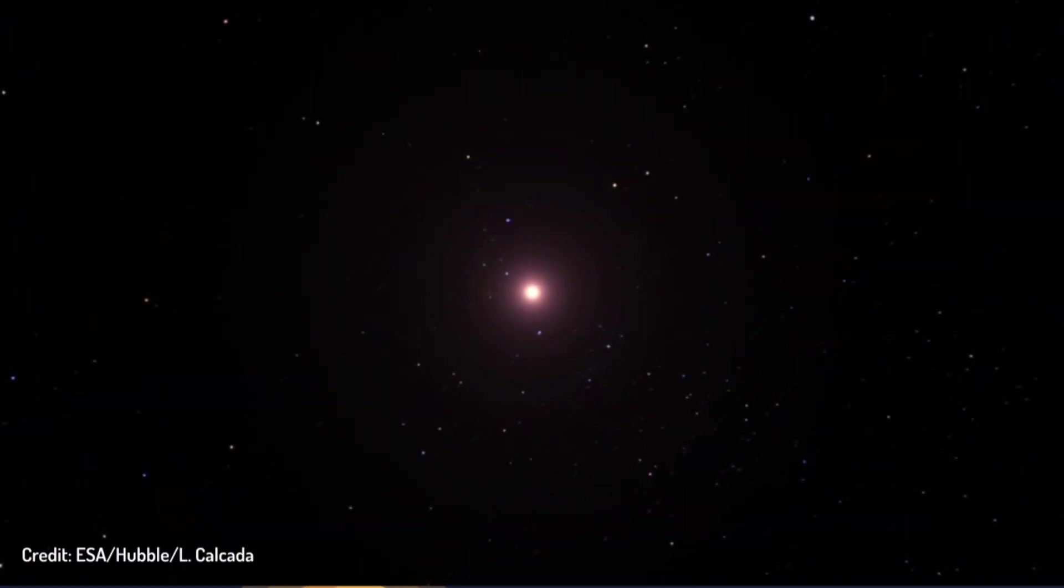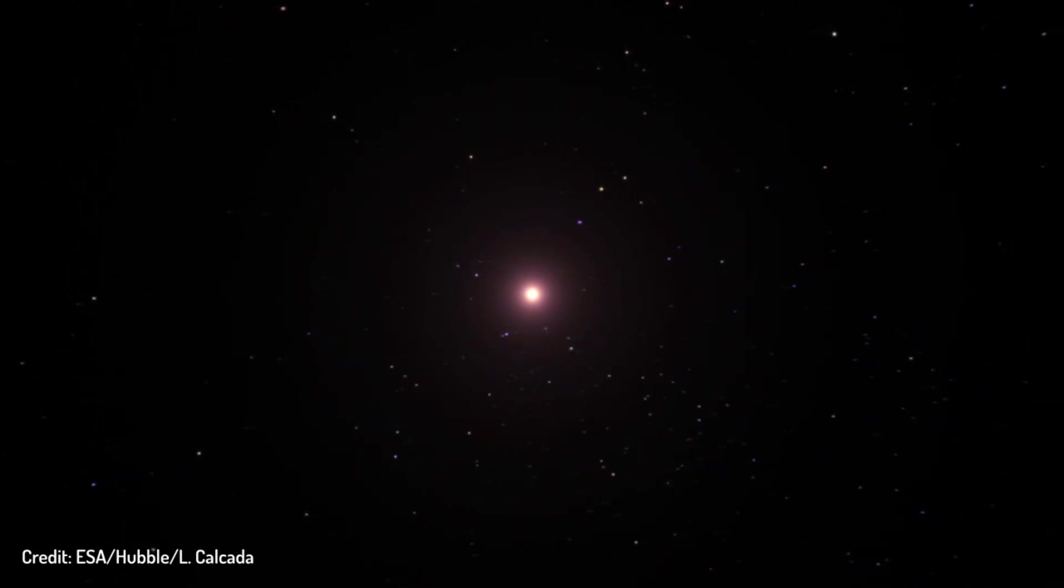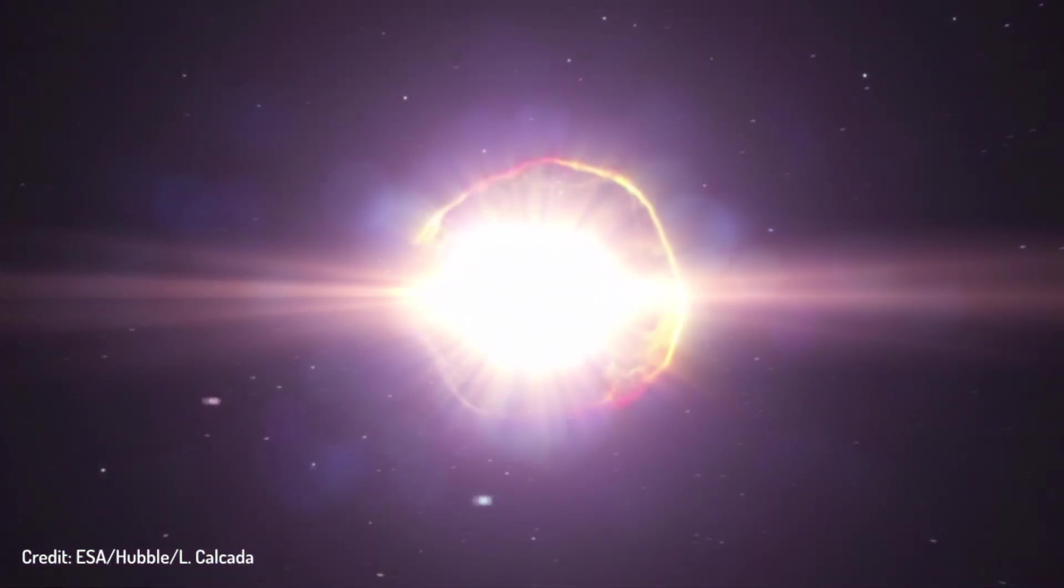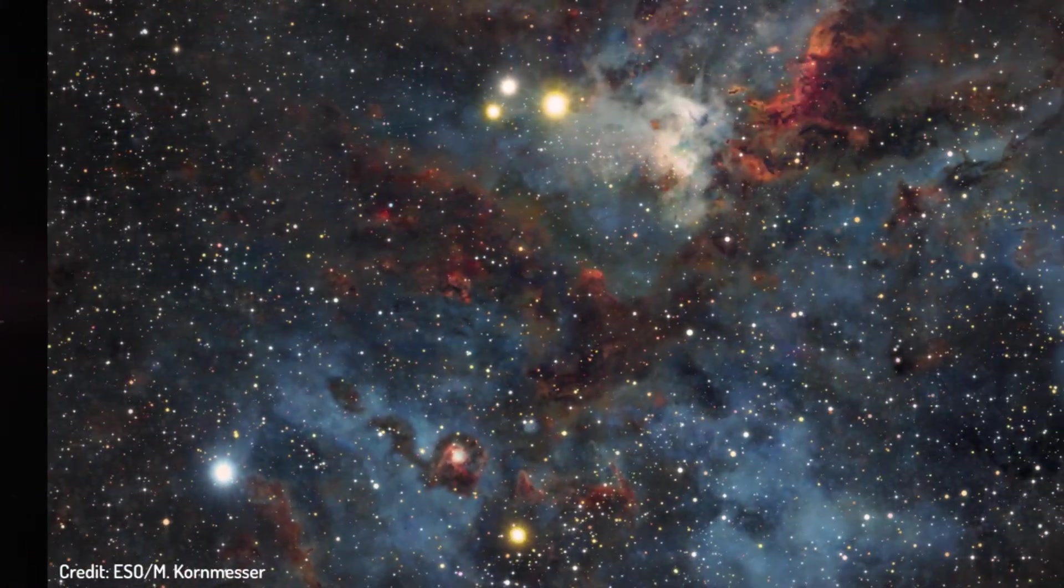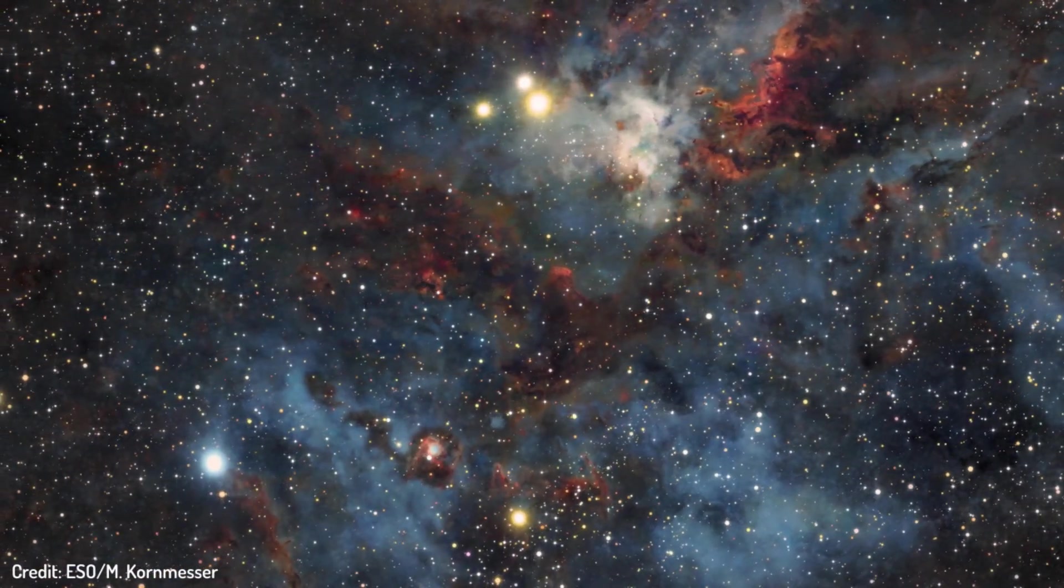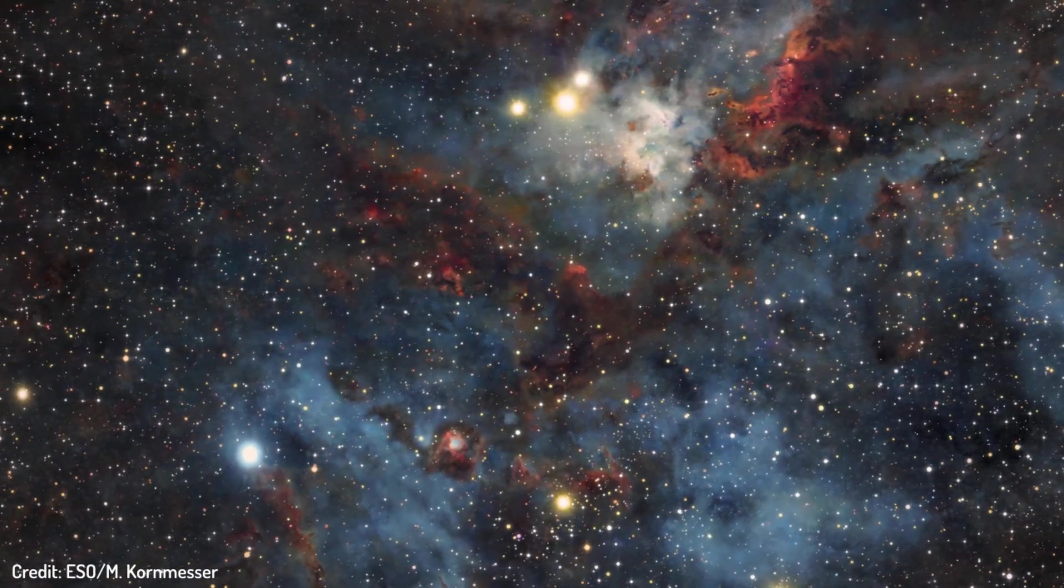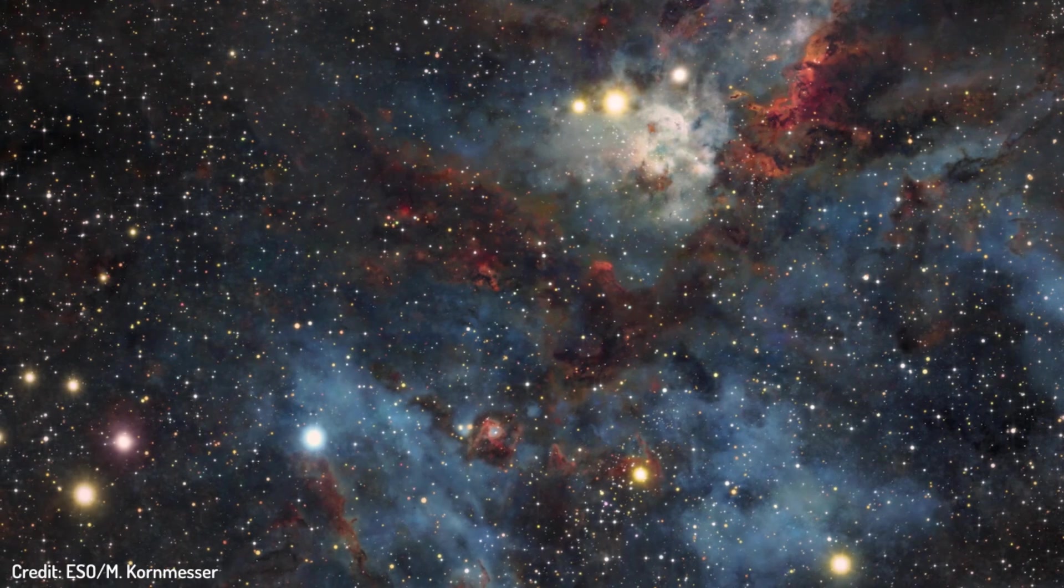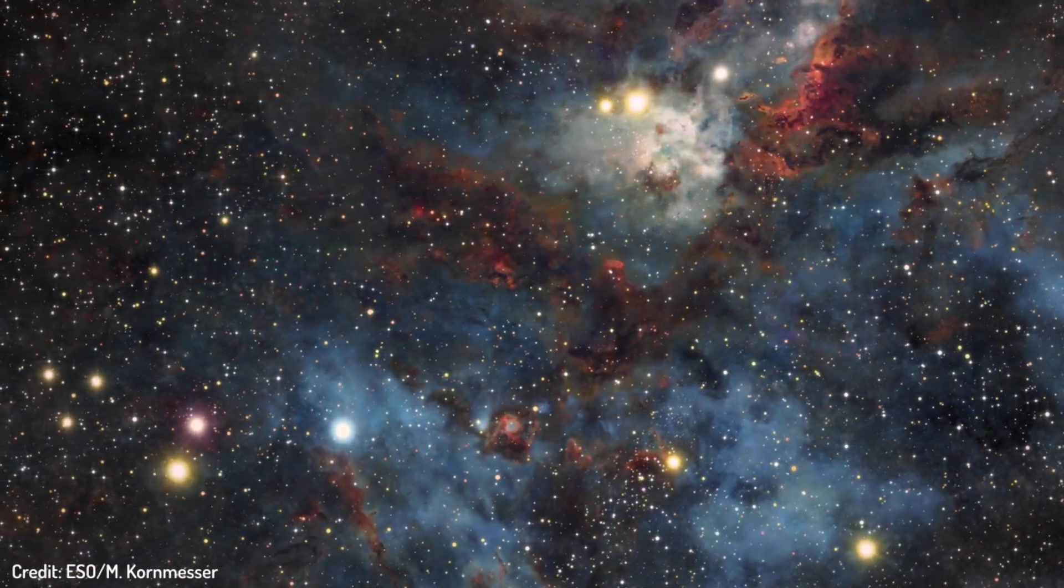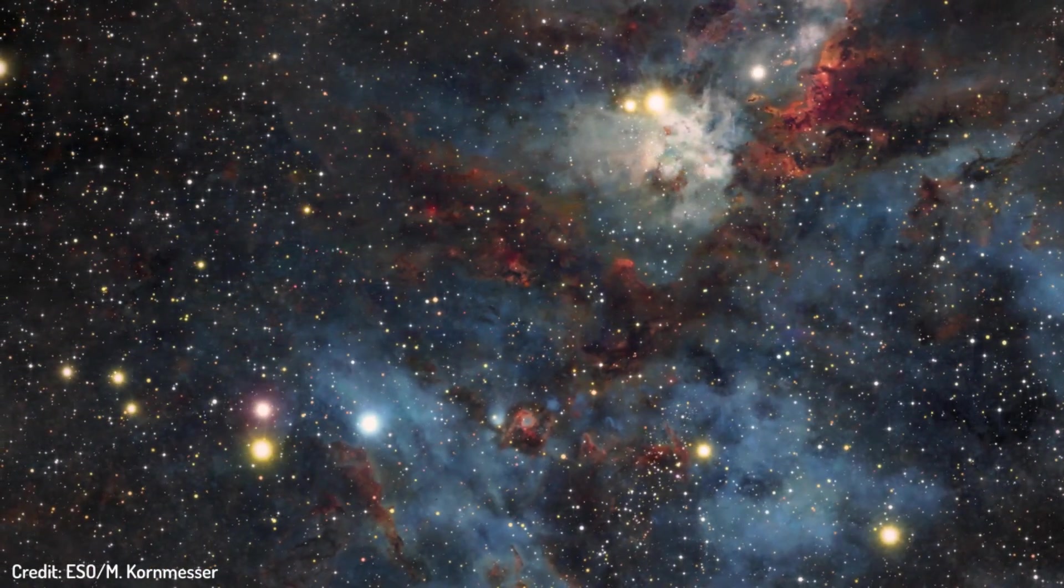When Betelgeuse explodes, before it reaches us, it will be decelerated by the interstellar medium, radiate all its energy away, mix into all of the hydrogen that makes up diffuse gas in our galaxy and form a bunch of new dust. The radiation from the supernova is slightly more interesting. The Betelgeuse supernova will not be on the high end of the luminosity distribution for supernovae. However, because it's so close to us, it will be one of the brightest objects in the sky for years.